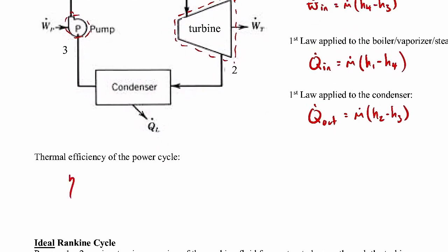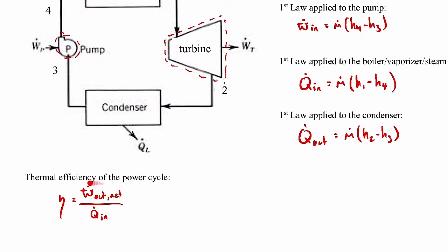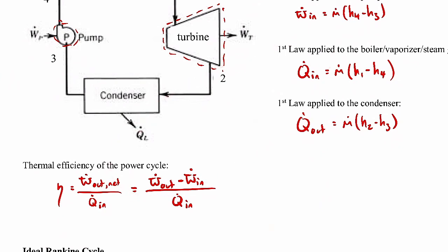The thermal efficiency of the entire power cycle is the net power out divided by the heat coming into the boiler. We care about net power out because we do have to put a little power back in to keep it cycling around. So net power out is the power out minus the power in, with the denominator still just q-dot in. We can substitute in our first law expressions and write everything in terms of specific enthalpies. Nothing new — it's all a review.